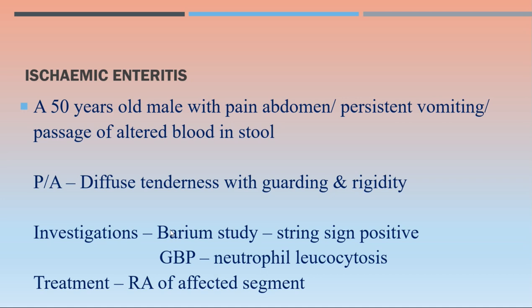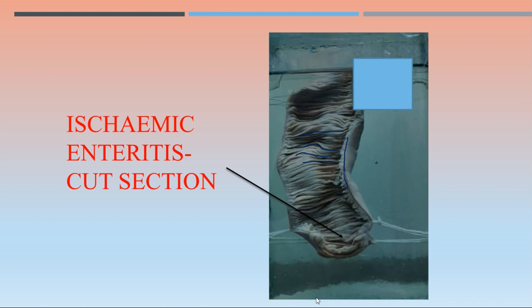One relevant investigation was a barium study where the string sign was positive. The string sign is seen in GI conditions where there is small intestinal stenosis or stricture, and a thin string of barium passes through it on imaging. The general blood picture showed neutrophil leukocytosis - an excessive number of neutrophils. Treatment is resection and anastomosis (RA) of the affected small intestine segment.